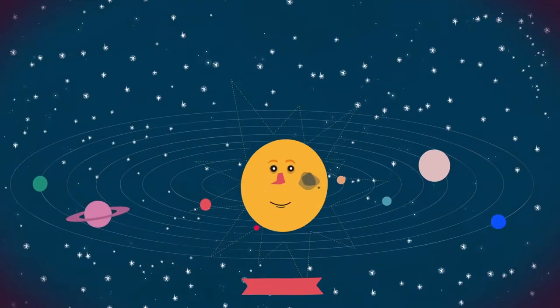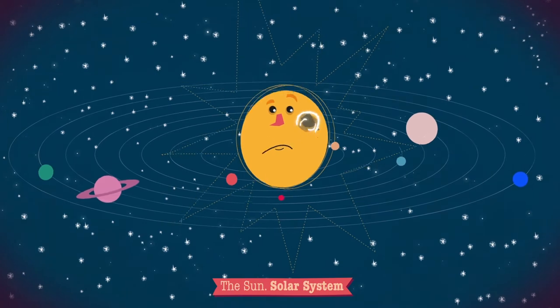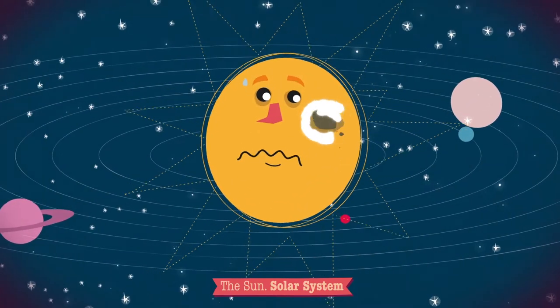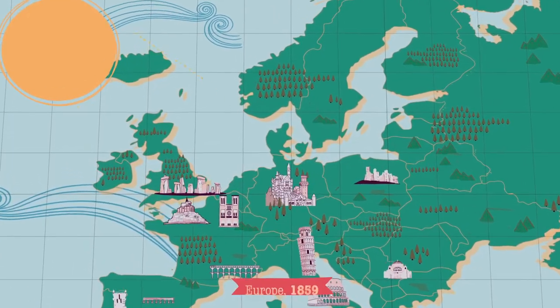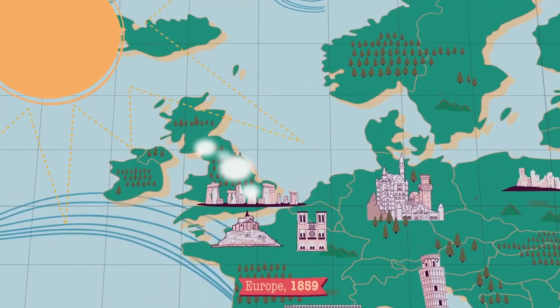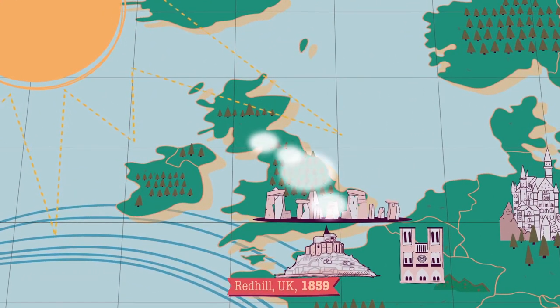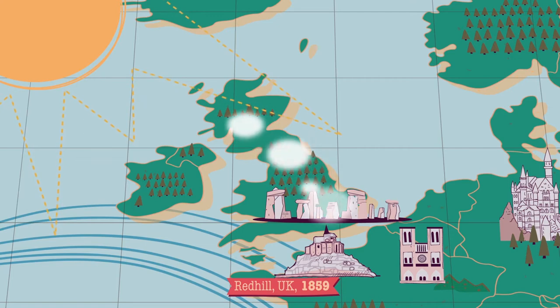En el Sol, a menudo ocurren unos eventos explosivos llamados fulguraciones. Se observaron por primera vez en Inglaterra a mediados del siglo XIX. Richard Carrington fue el primero en identificar este fenómeno en 1859 desde el Observatorio Redhill, al sur de Londres.